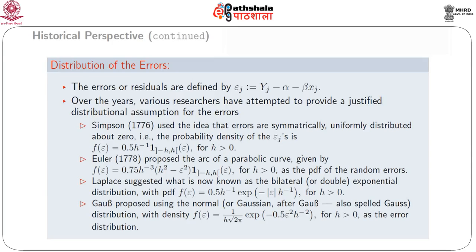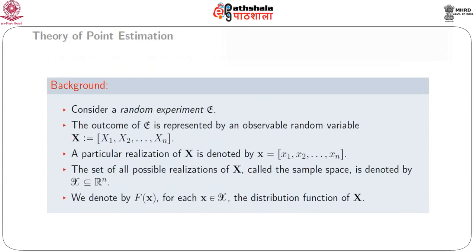Laplace suggested what is now known as the bilateral or double exponential distribution, where the pdf of the error is f(epsilon) equals (1/2) times (1/h) times e to the power of minus |epsilon| divided by h, for h greater than 0. Gauss proposed using the normal or Gaussian density with f(epsilon) equals (1/h) times (1/sqrt(2π)) times e to the power of minus epsilon² divided by h², for h greater than 0, as the error distribution. This concludes the background of the theory of point estimation.